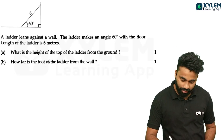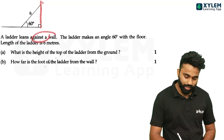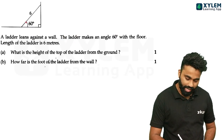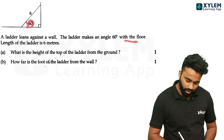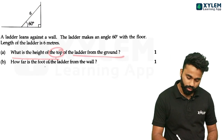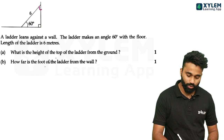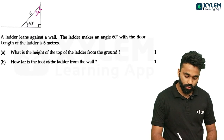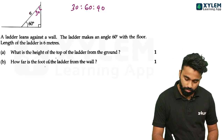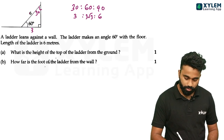Now I will show you the next question. One ladder, one wall. The ladder makes an angle of 60 degrees with the floor. The length of the ladder is 6 meters. Let me show you the height of the top of the ladder from the ground. The height is along the side. I have 6 meters. The base is 3 meters.